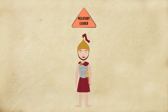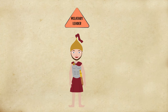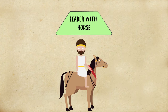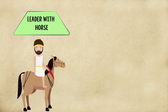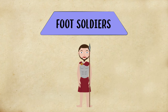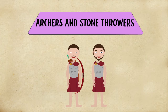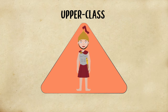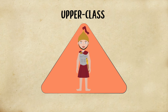The wealthiest army men were military leaders, followed by those who could afford a horse and be part of the cavalry. Greek armies were mostly made up of hoplites, or foot soldiers, and the lowest ranks were archers and stone throwers. Upper-class Greeks were all known as freemen, or Greek males that were born in Greece.